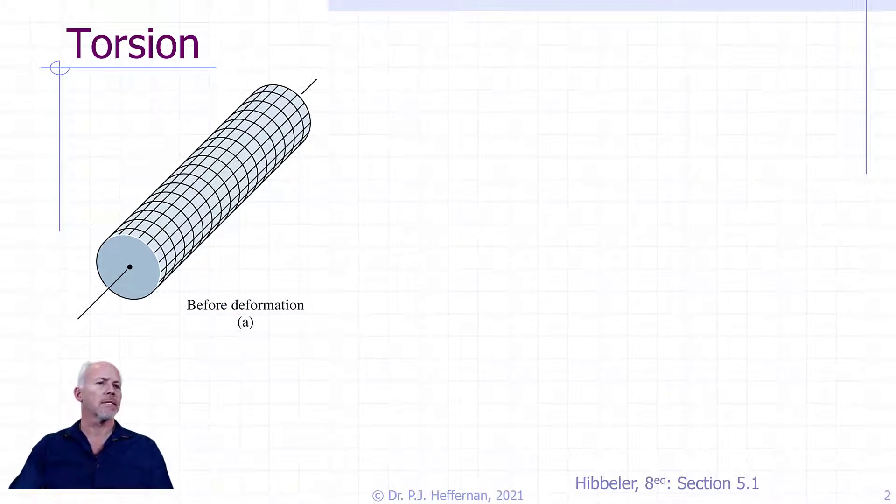Remember from statics that a torque is a moment that tends to twist the member about its longitudinal axis. To visualize the effect of torsion on a straight circular shaft, let us consider a highly elastic and deformable bar like rubber.